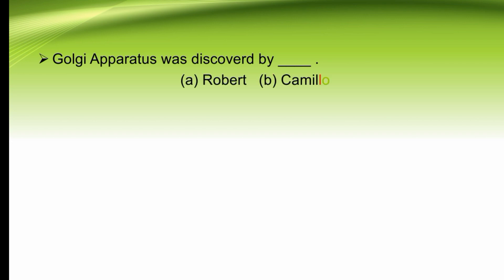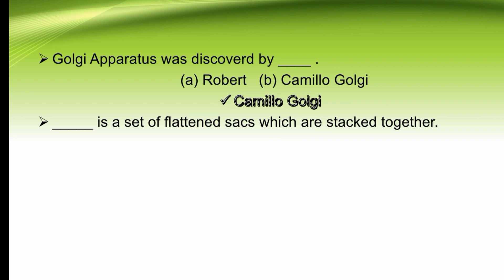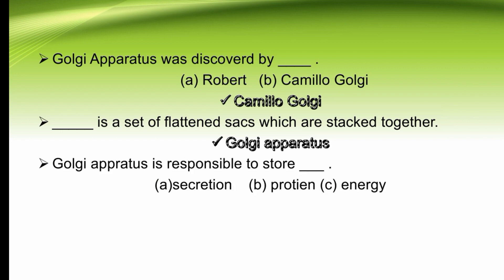Golgi apparatus was discovered by dash. Golgi apparatus was discovered by Camillo Golgi, due to which it is called Golgi apparatus. Dash is a set of flattened sacs which are stacked together — Golgi apparatus. So Golgi apparatus is a set of flattened sacs stacked together. Golgi apparatus is responsible to store dash — secretion, protein, or energy. The right option is secretion. Golgi apparatus is responsible to store secretion.